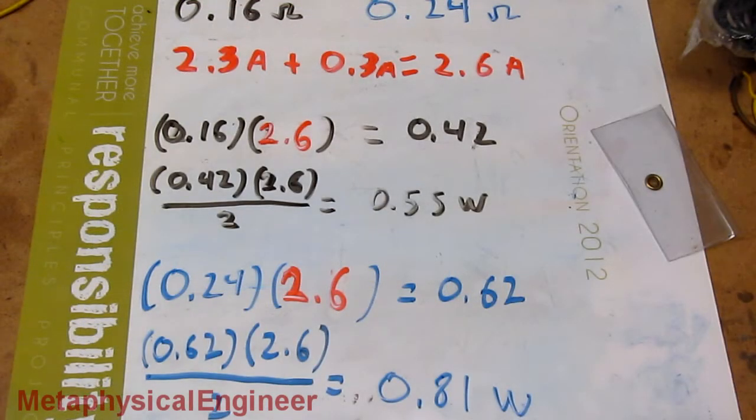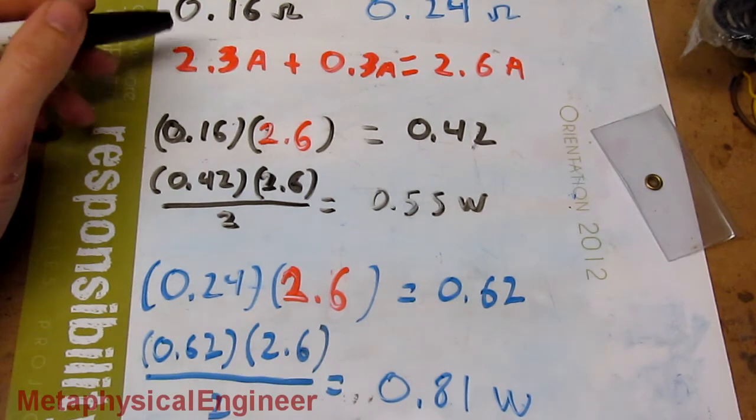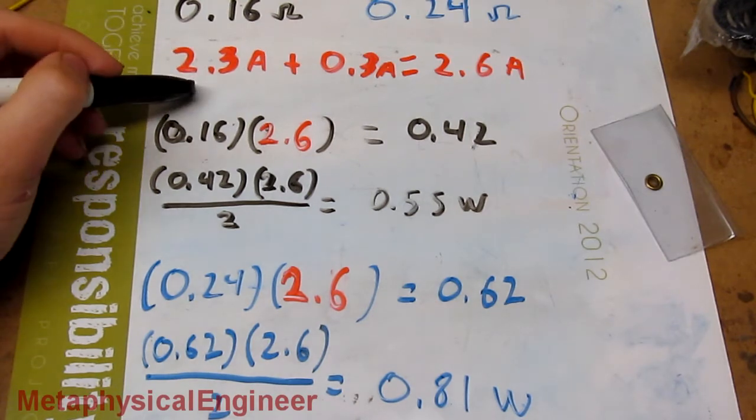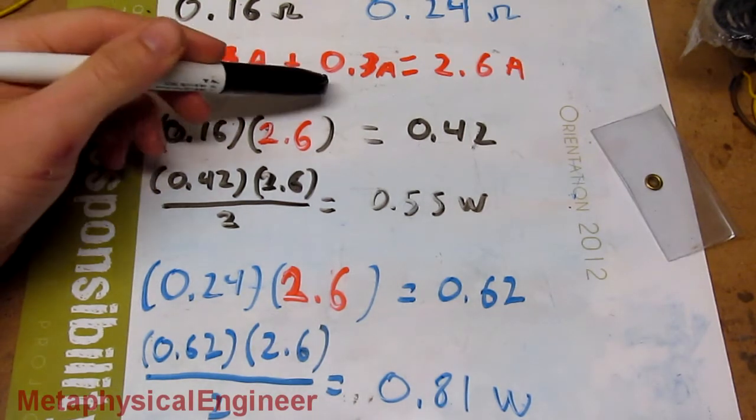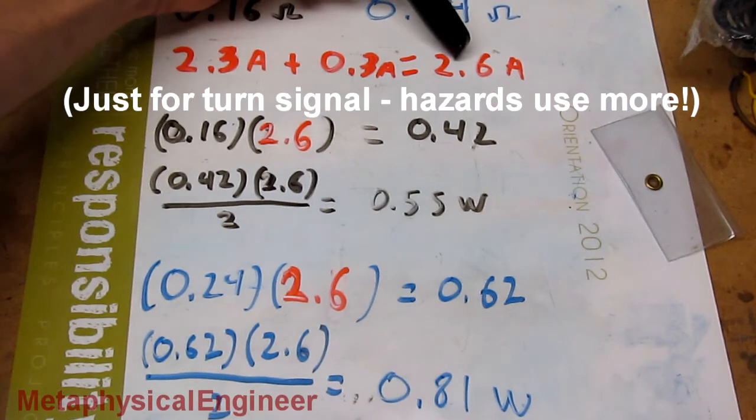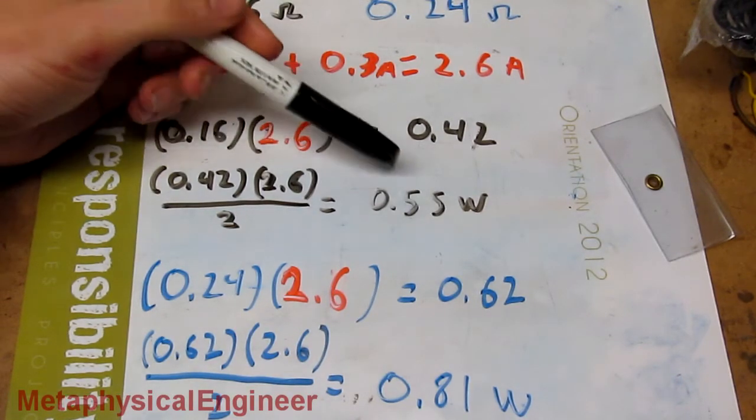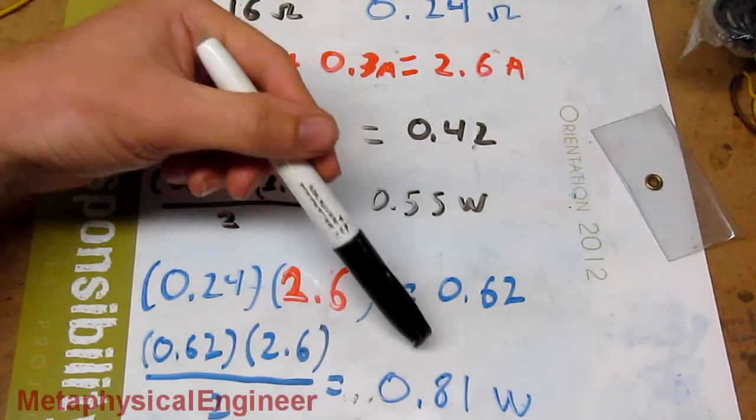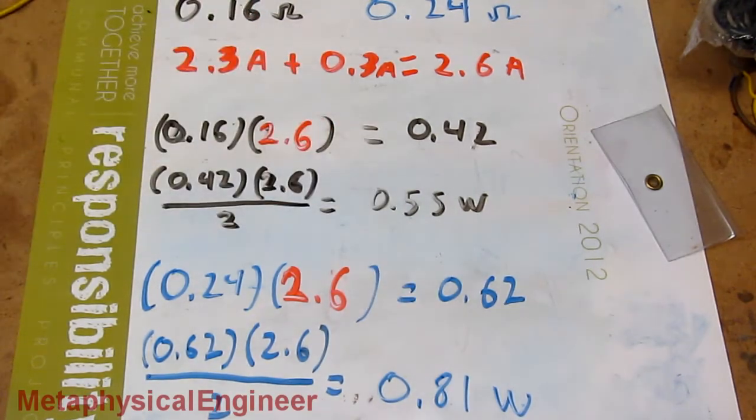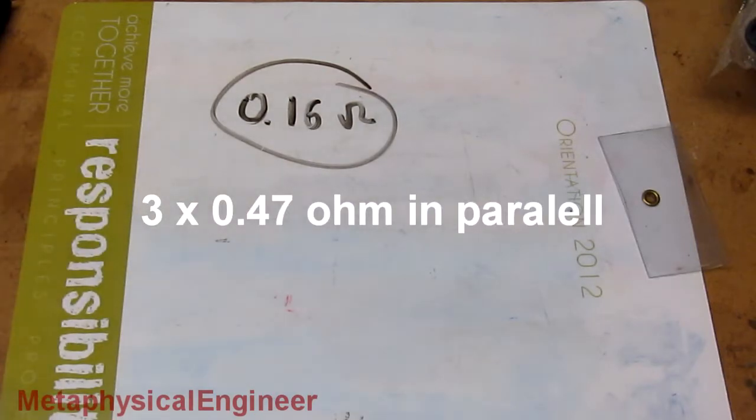But what would happen if an LED bulb gives up and I have to temporarily run an incandescent? That pulls 2.3 amps. Add in the LEDs, and we have an overload of 2.6 amps. Do the math on that, we get 0.55 watts, or 0.81 watts. That's actually quite a bit, considering the resistors are going to be crammed into a case with no ventilation. 0.16 ohms it is, unless this still doesn't solve the glitching.